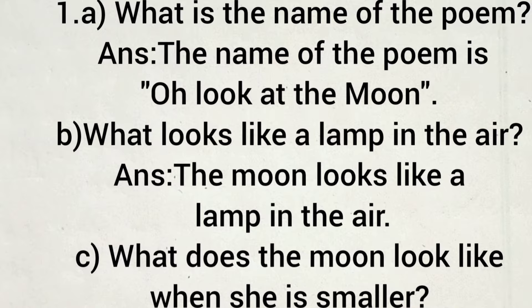A number: what is the name of the poem? The name of the poem is 'Oh Look at the Moon.' B number: what looks like a lamp in the air? The moon looks like a lamp in the air.